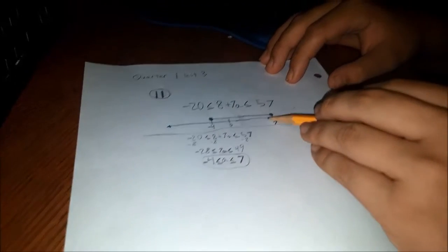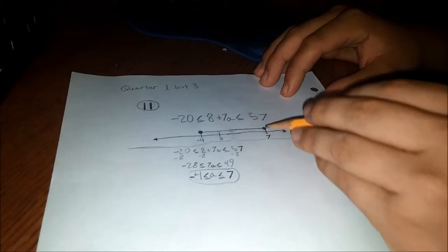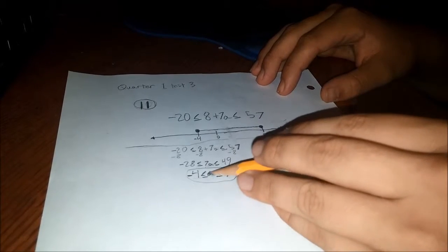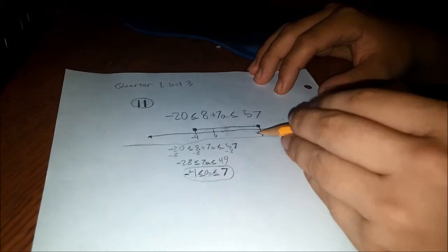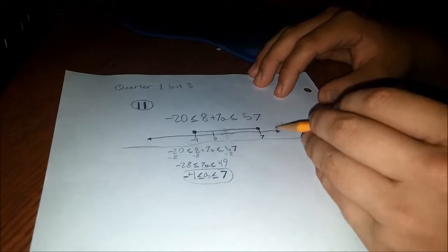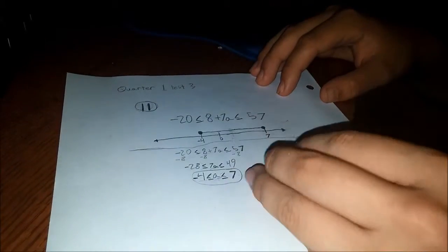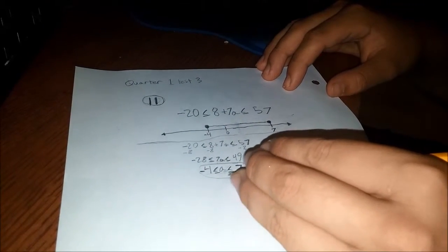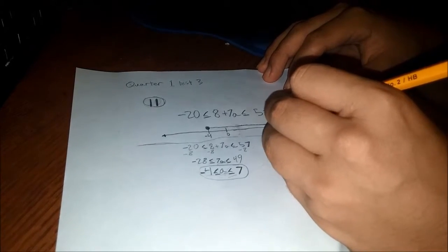We then have to graph it up here, which reads that the variable A is somewhere in between -4 and 7. And because these are less than or equal to signs, the dots here are filled in.